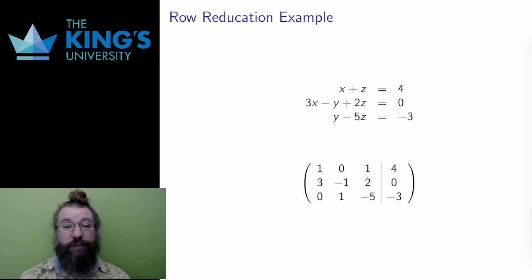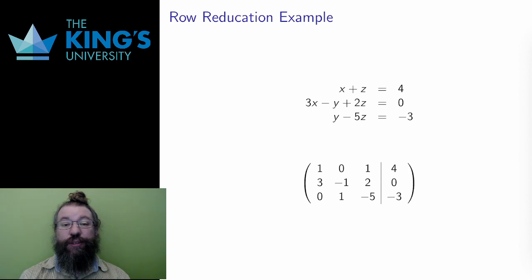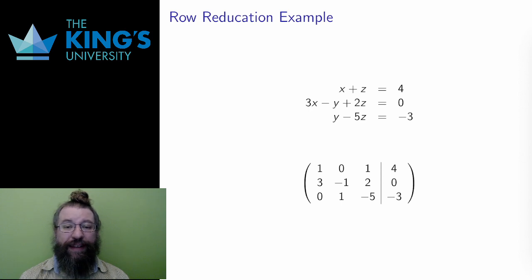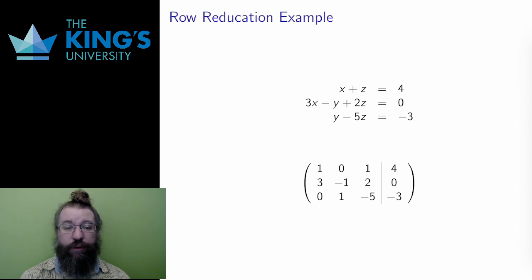Now let's solve some systems. I'm going to take a system, encode it as a matrix, use row operations to put it in reduced row echelon form, and read off the solutions. I'll be very pedantic here, trying to show each row operation step and the strategy I use. Let's get started.